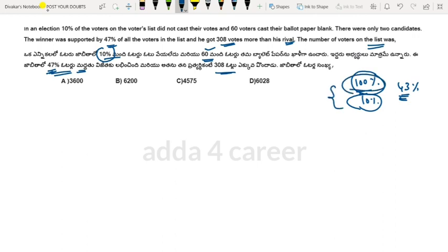So if you want to solve this question, what I am going to say is that total voters is 100x. So we will have 10 percent of this, which is 10x.